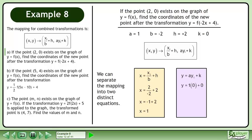Next, plug in 0 for the initial y value, 1 for the a value, and 0 for the k value. The transformed y coordinate is 0. The point becomes (1, 0) after the transformation is applied.